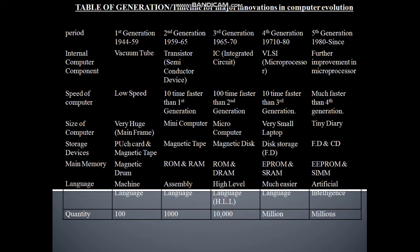This is the generation table — a timeline for major inventions and computer evolution.